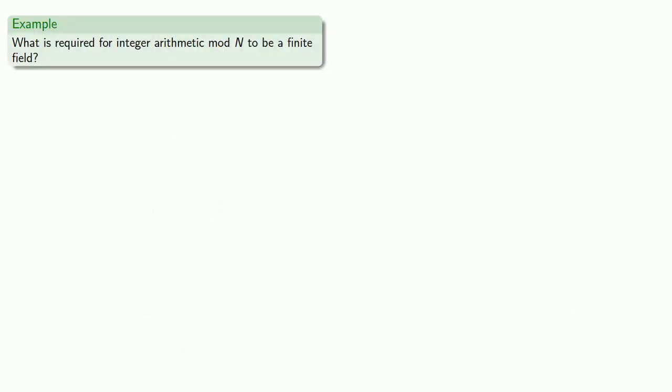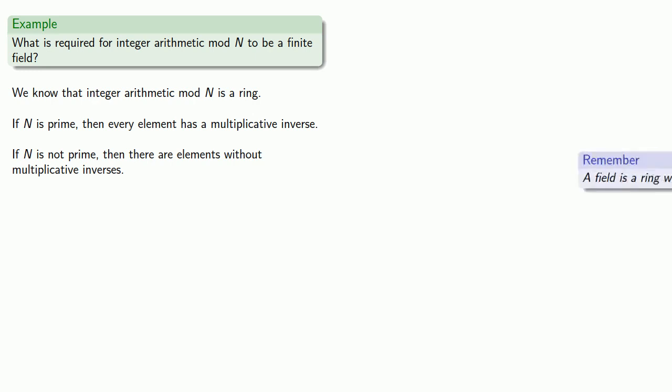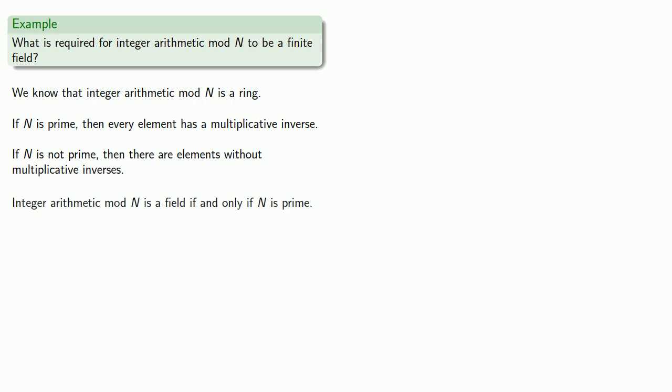And so now here's something we want to consider. What is required for integer arithmetic mod N to be a finite field? We already know that integer arithmetic mod N is a ring. We also know that if N is prime, then every element has a multiplicative inverse. On the other hand, if N is not prime, then there are elements without multiplicative inverses. And remember, the distinguishing property of a field is that every non-zero element has an inverse. And so that tells us that integer arithmetic mod N is a field if and only if N is prime.